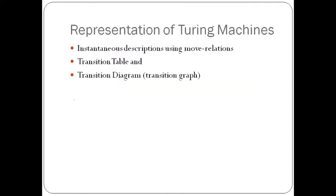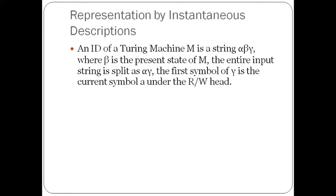We can use certain things to represent the Turing machine: instantaneous descriptions using the move relation, transition table, and transition diagram. Let us see them one by one.